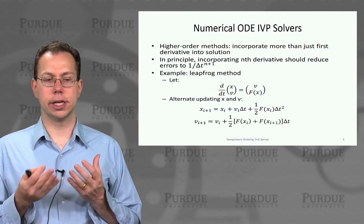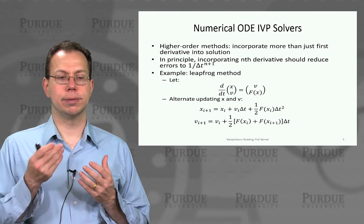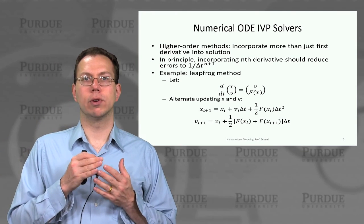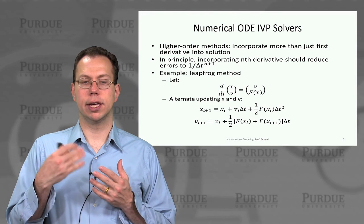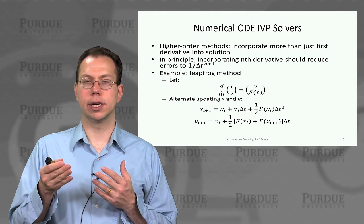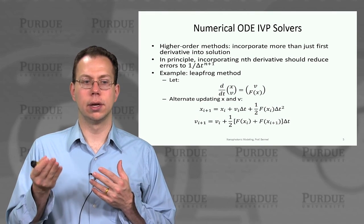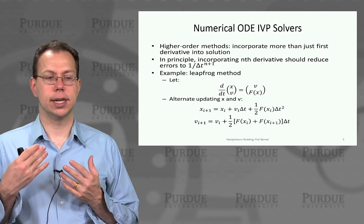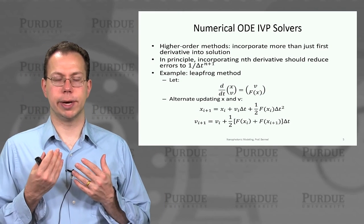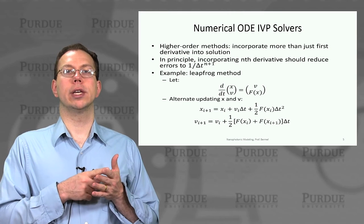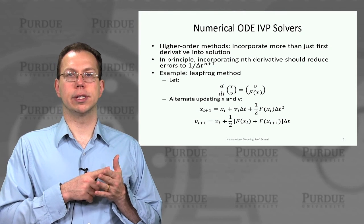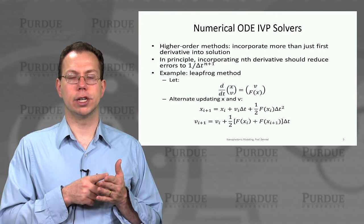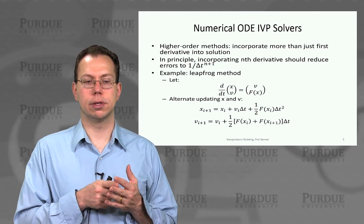There are these higher order methods. In principle, if you have incorporated up to the nth derivative, then the error should go as one over delta t to the n+1. This sets the stage for using a leapfrog method, in which we would not only look at the value itself iterated over time like in the Euler method, but also its first derivative.